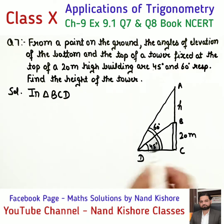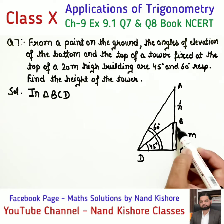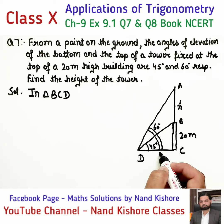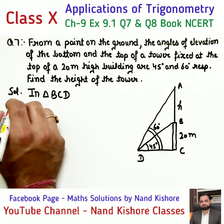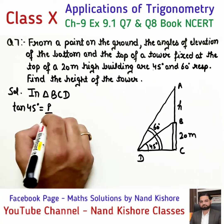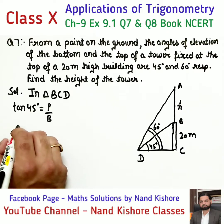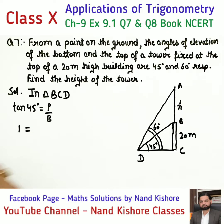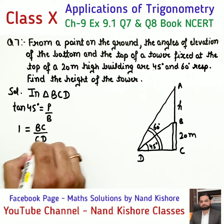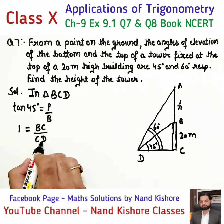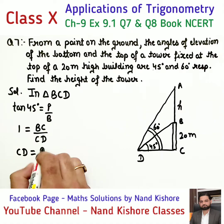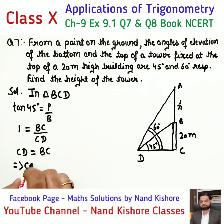In triangle BCD, BC is the perpendicular and DC is the base. We apply tangent 45, because the angle is 45 degrees. Tangent 45 equals 1, so perpendicular BC upon base CD equals 1. Cross multiplying, CD equals BC.